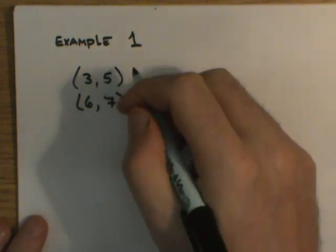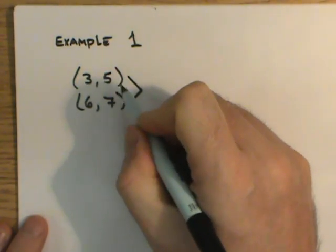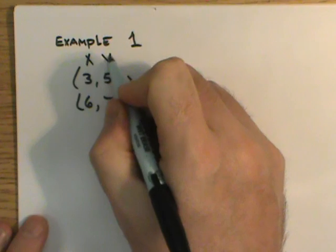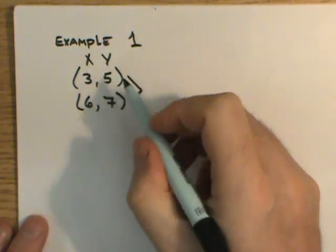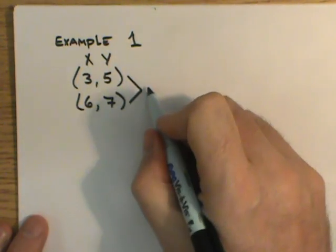If you recall, delta y is how you go from 5 to 7, because you have ordered pairs that are stacked. You've got y, y, x, x. So to go from 5 to 7, you would add 2.